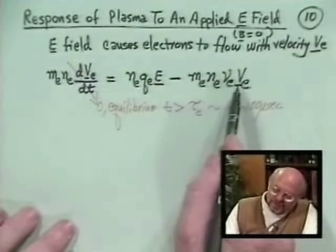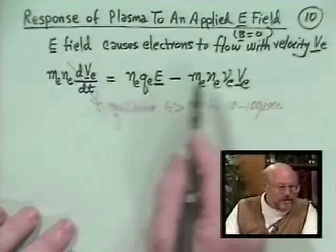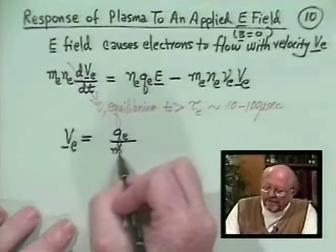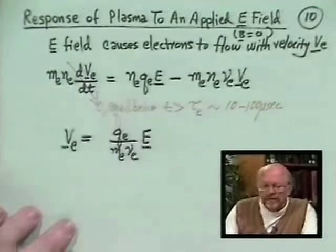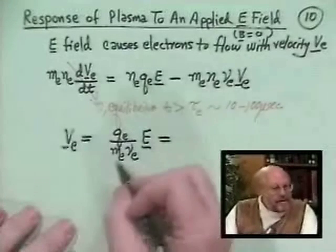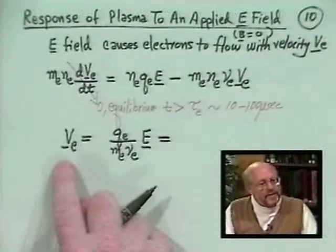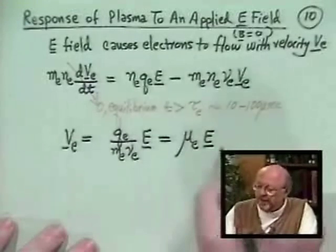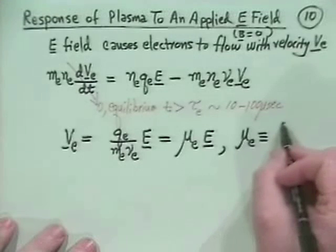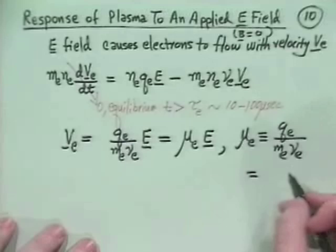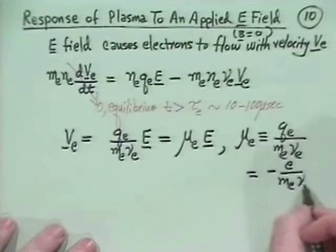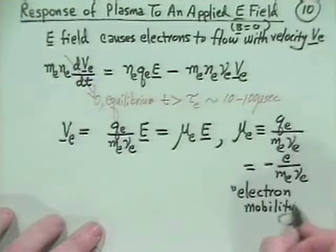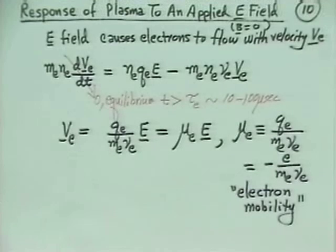We can solve for the flow velocity induced by the electric field by dividing through. We find the electron flow velocity is Q_E over M_E nu_E times the electric field. This is called a mobility relation — the mobility of electrons induced by the electric field. The mobility coefficient mu_E is defined as Q_E over M_E nu_E, which is actually a negative quantity: minus e over M_E nu_E. It's known as the electron mobility.